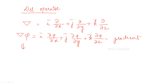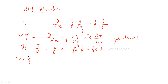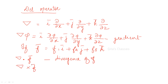If F bar is a vector point function — F1 i plus F2 j plus F3 k — then del can be applied on F as either a dot product or cross product. Del dot F is called the divergence of F, and if you take the cross product, it is called the curl of F.